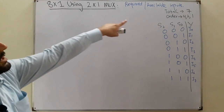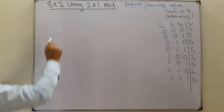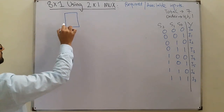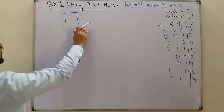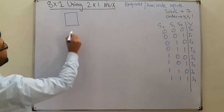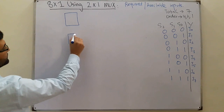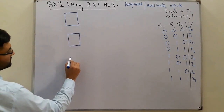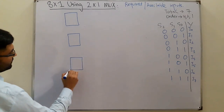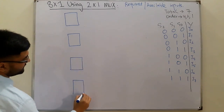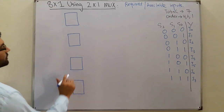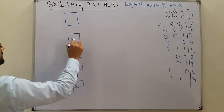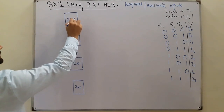Now the order is first 4. So we draw 4 2x1 multiplexers — these are your 4 2x1 muxes that are first in the order.